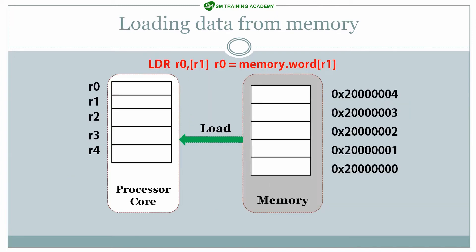Now let us try to understand the loading data process from memory with an example. Let us assume the instruction provided to the processor is LDR R0, [R1]. This LDR R0, [R1] instruction is used for storing the data available at the address specified in register R1 into register R0.